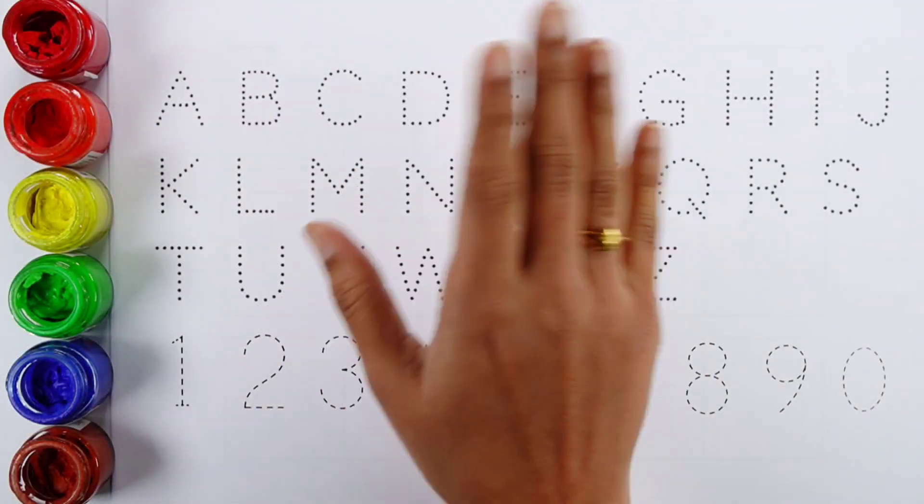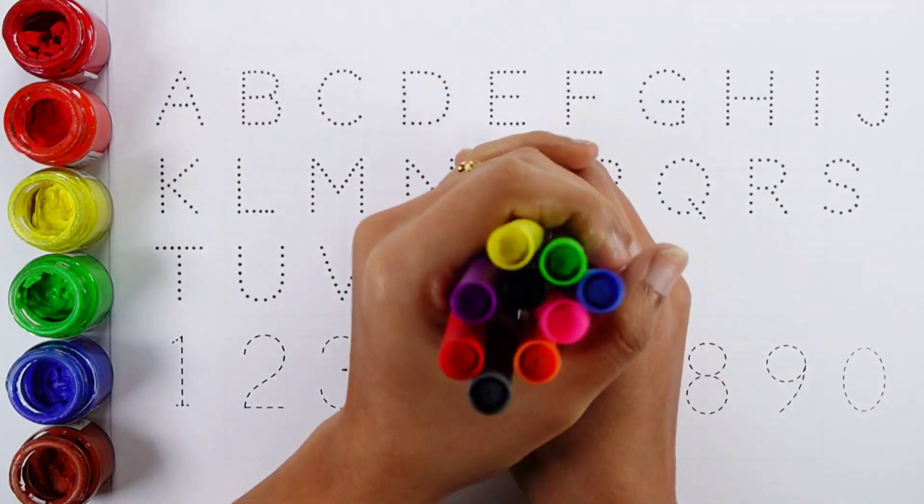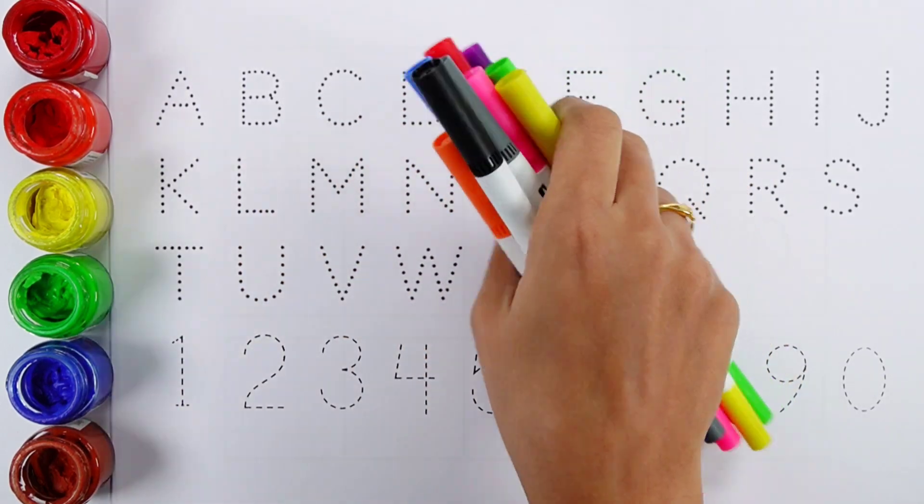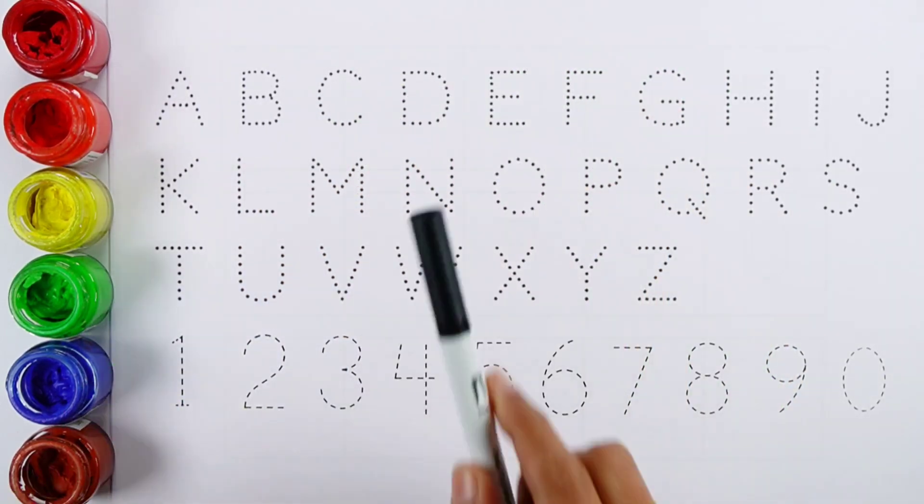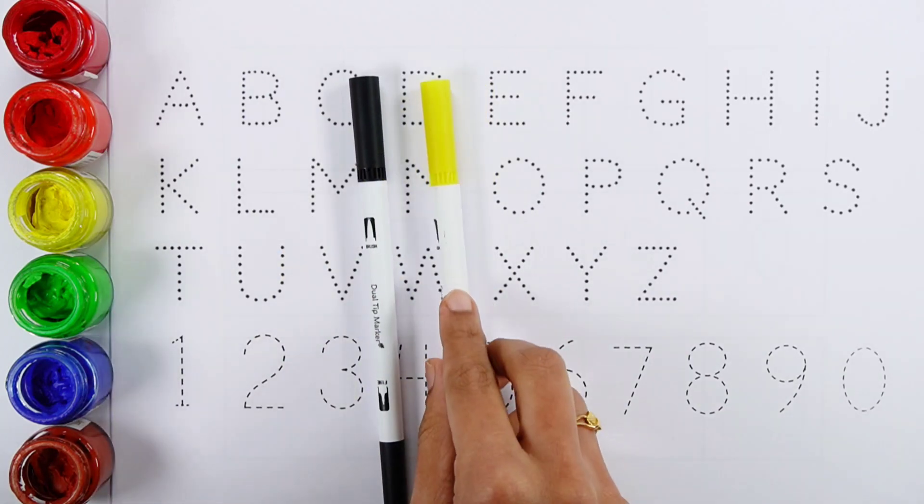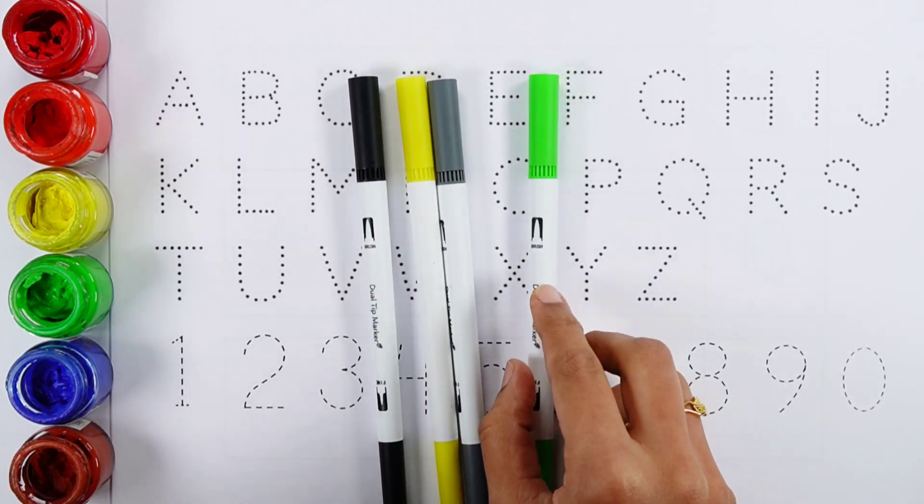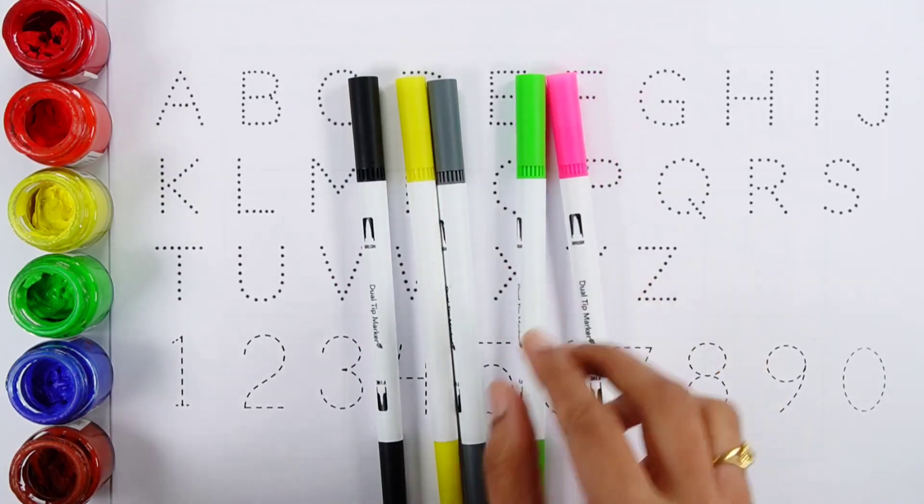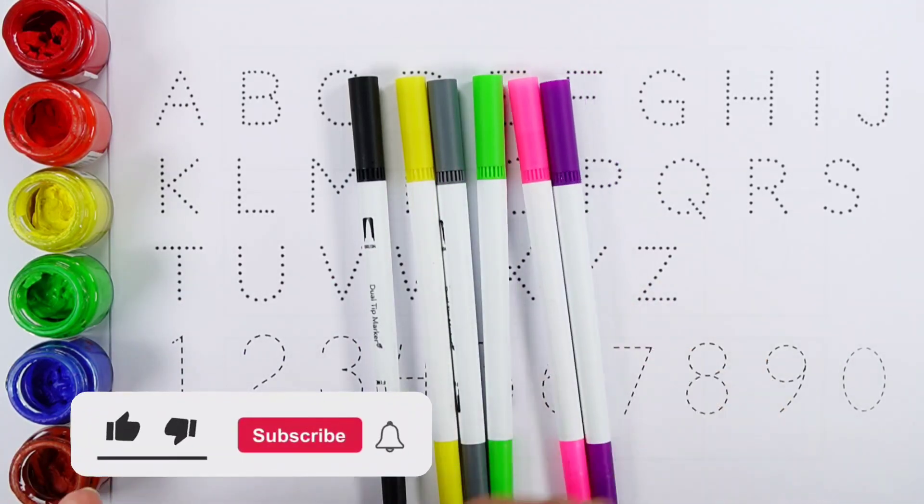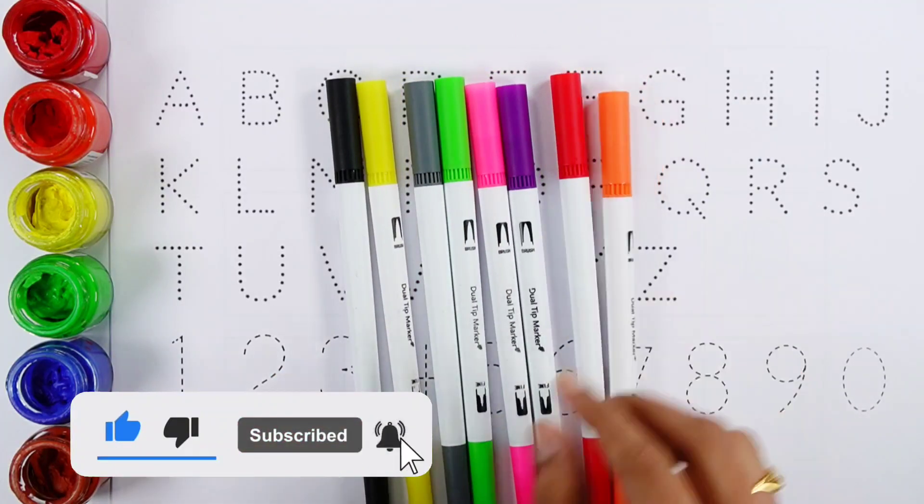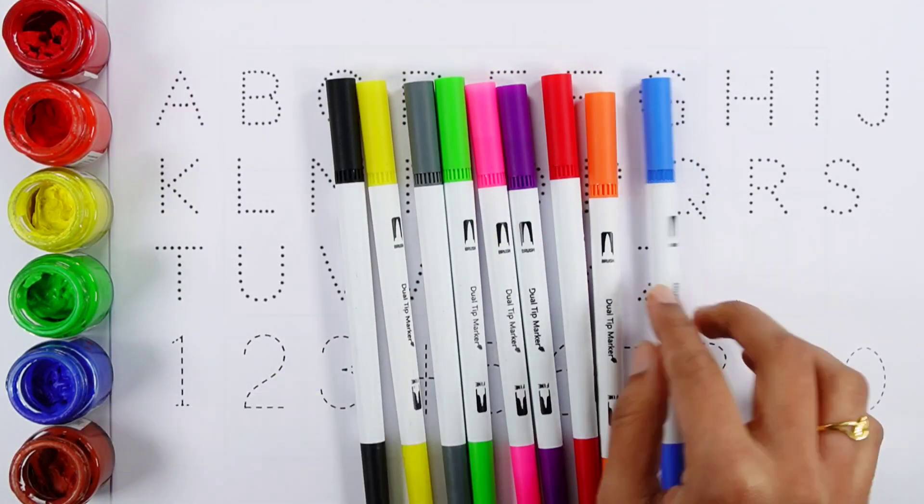Hello guys. Let's learn some colors. Black color. Yellow color. Gray color. Green color. Pink color. Purple color. Red color. Orange color. Blue color.